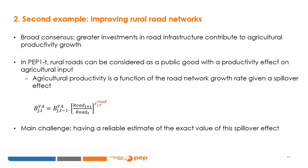In this second example, we focus on improvements in the rural road network as a planned adaptation for coping with climate change. In many developing countries, this rural road infrastructure is still very limited, which explains its inefficiency. Extant literature suggests that greater investments in such core infrastructures could contribute to agricultural productivity growth. Accounting for this effect in the PEP1T model can be relevant when considering the rural road network as a public good with a productivity effect on agricultural activities. Within this framework, agricultural productivity is now a function of the road network growth rate and of a spillover effect. Unfortunately, there is no consensus on the exact value of this spillover effect in economic literature, and empirical estimates display variation across studies. Perhaps the best strategy is to estimate it yourself.